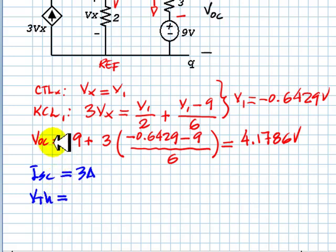we know the value of the Thevenin voltage. It's just VOC, which is 4.1786 volts.